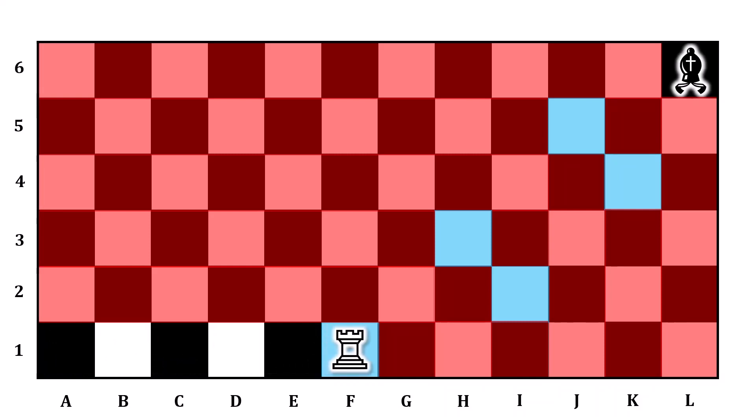Further notice that B1, C1, D1, and E1 would all be losing moves. Because if you were to open with the rook on one of those squares, your opponent could move to F1 instead.